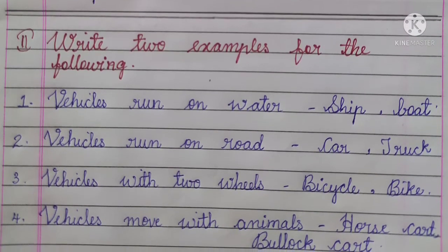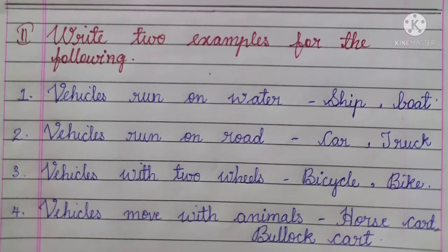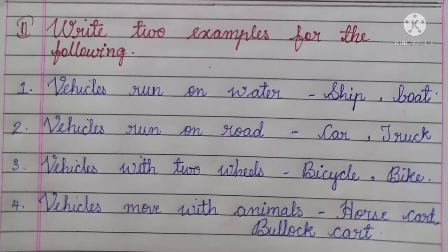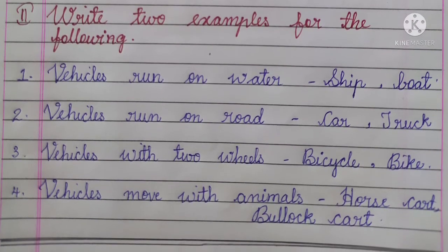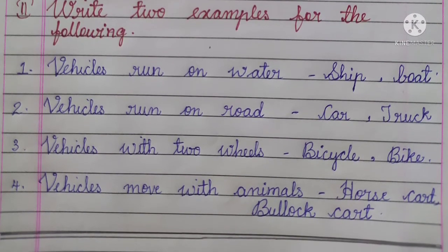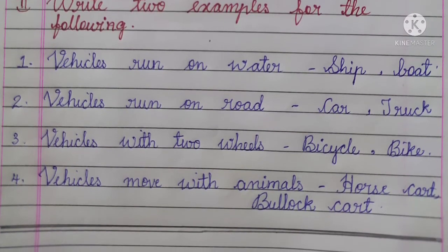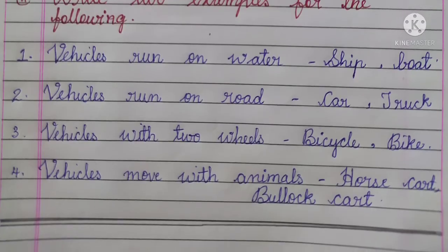Number 3, vehicles with two wheels — bicycle, bike. Number 4, vehicles move with animals — horse cart, bullock cart.